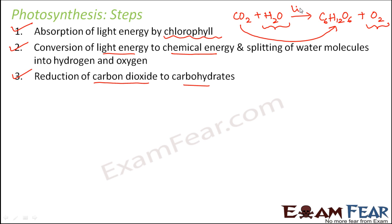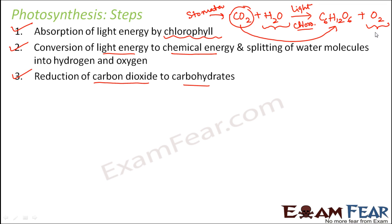Light plays an important role. Chlorophyll plays an important role because it helps in absorbing the light energy. Carbon dioxide comes inside the plants through the stomata. Water is provided to the plants — plants also take water from the soil. And the oxygen also gets released through the stomata. This is how the entire process of photosynthesis takes place.